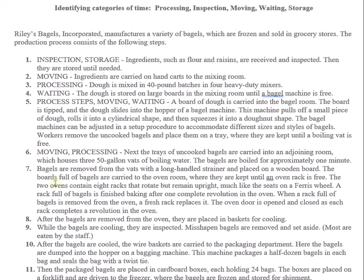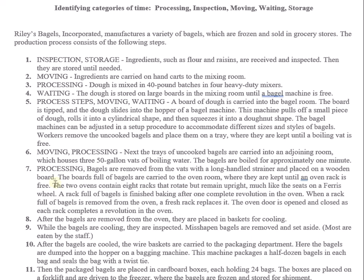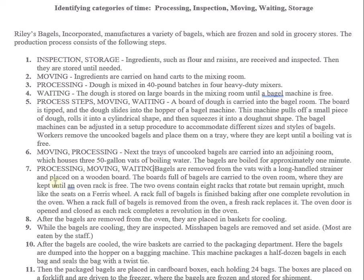Step seven: bagels are removed from the vats with a long-handled trailer and placed on a wooden board. Then they're kept until an oven rack is free, and a full rack is baked. Step seven includes processing, moving, and waiting activities.